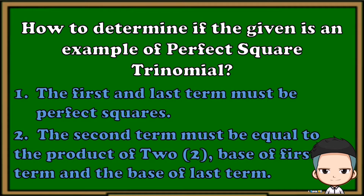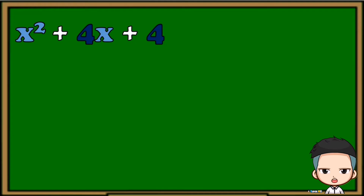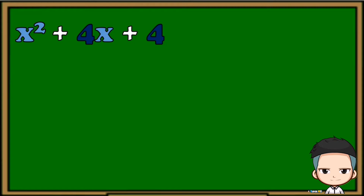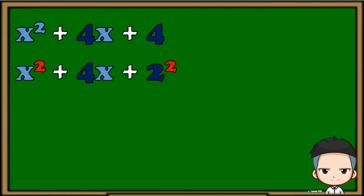Let's try this example: x squared plus 4x plus 4. Let's check first if this is an example of a perfect square trinomial. Are the first term and last term both perfect squares? Yes — x squared is a perfect square and 4 is also a perfect square.